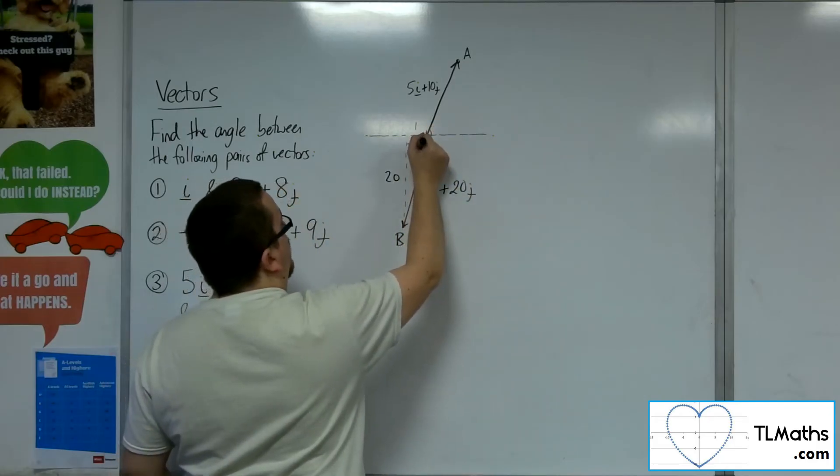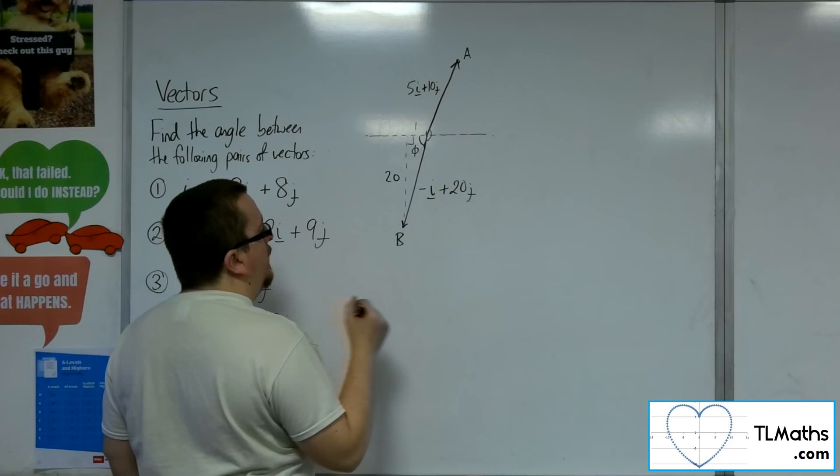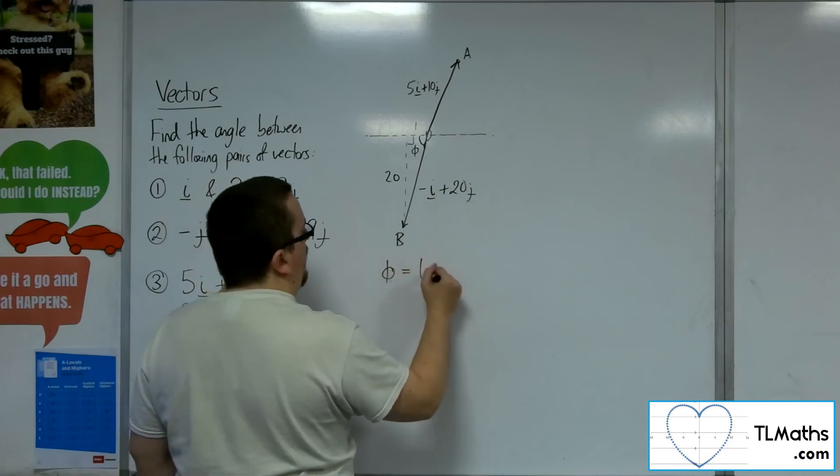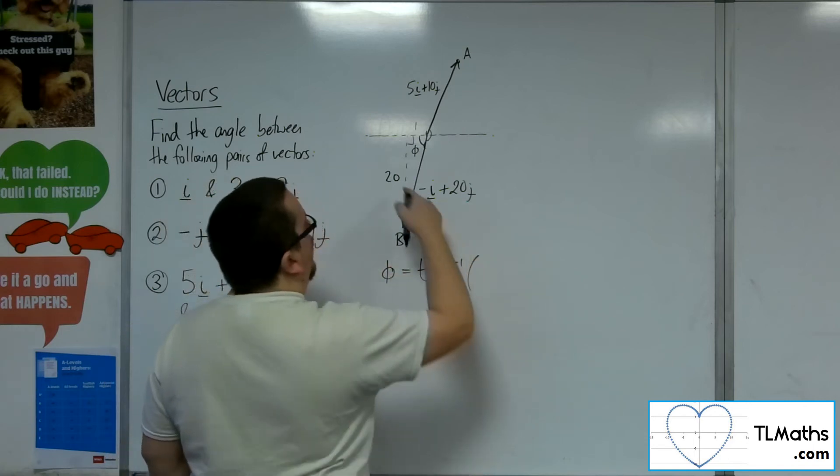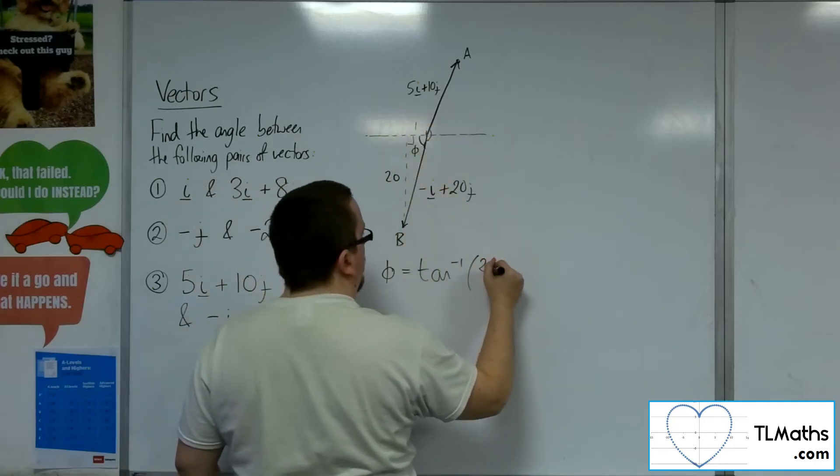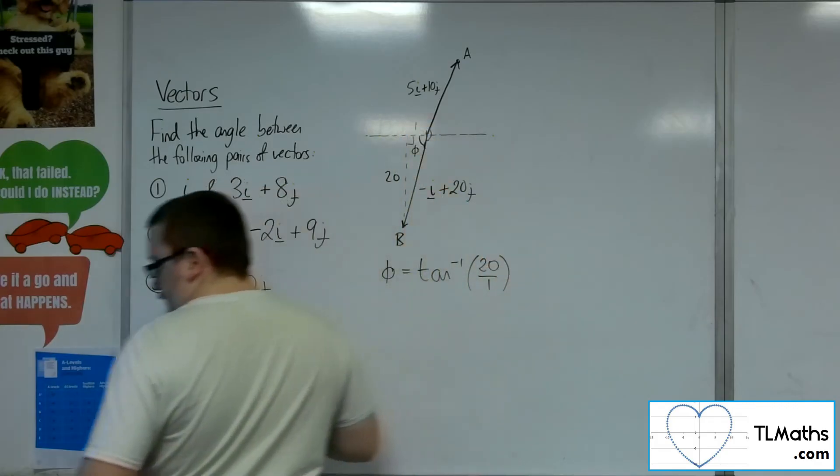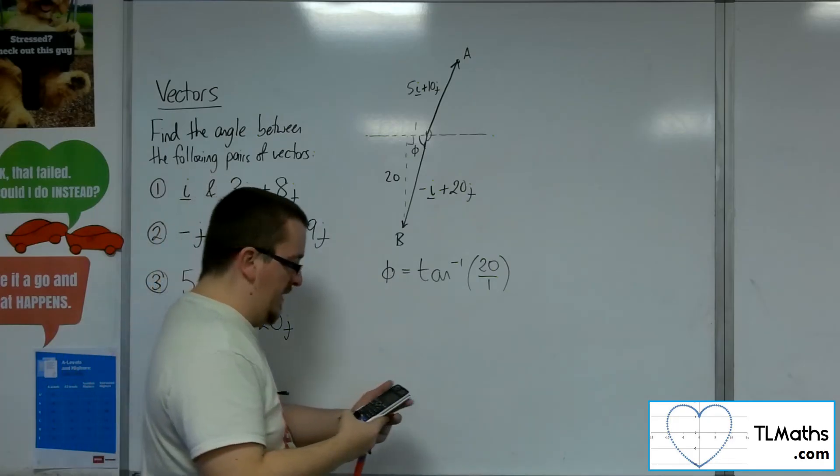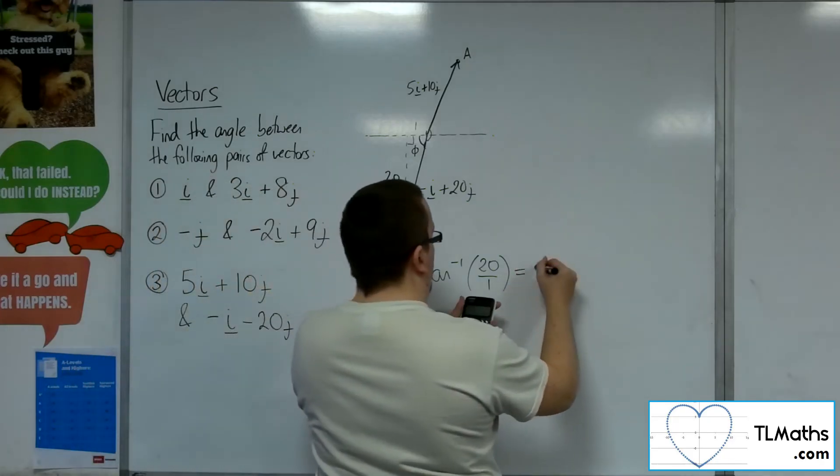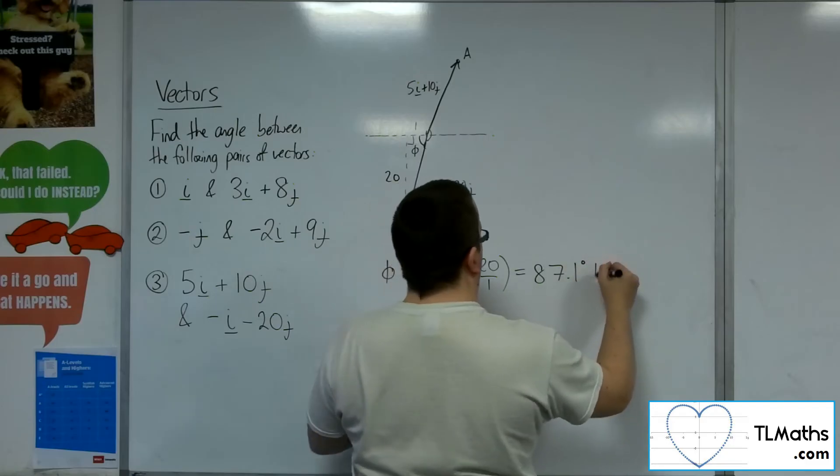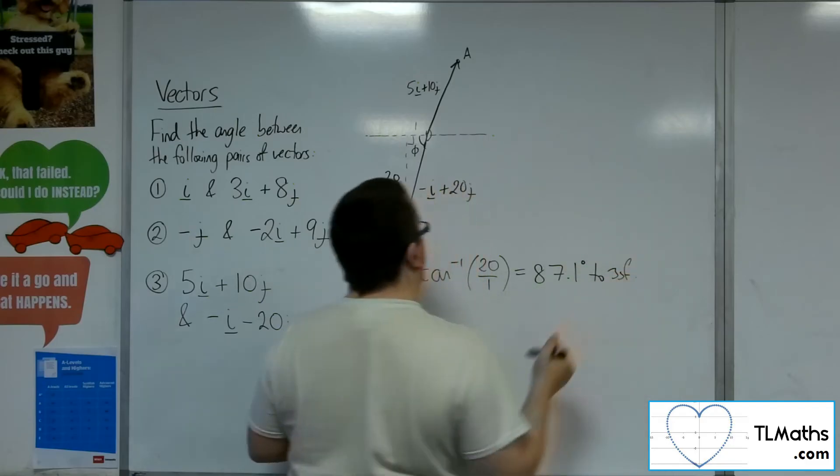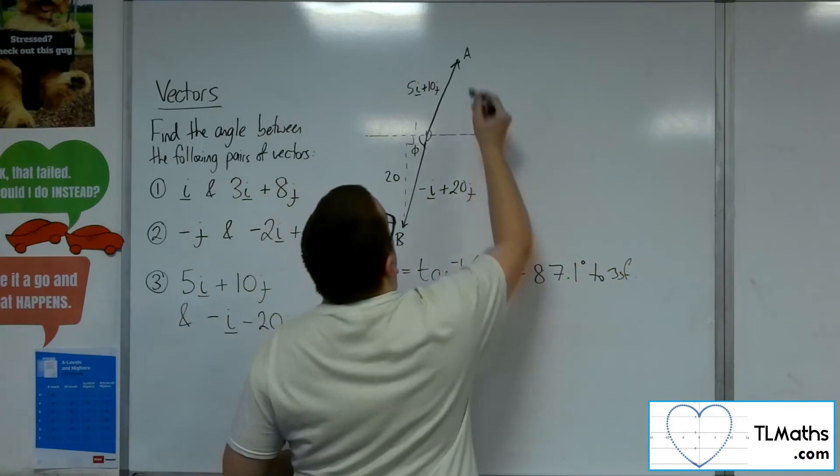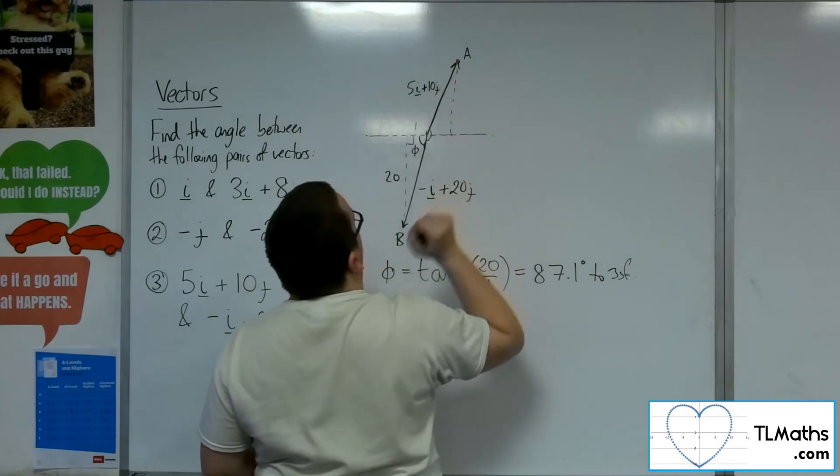So if I call that phi, then phi is the inverse tan of 20 over 1. So inverse tan of 20 is 87.1 degrees to 3 sig fig.